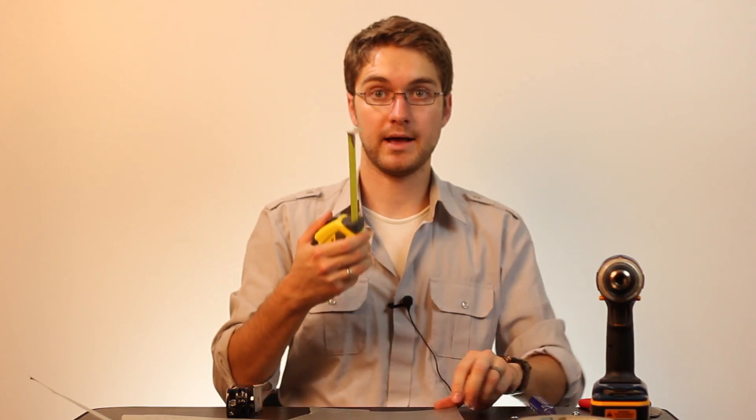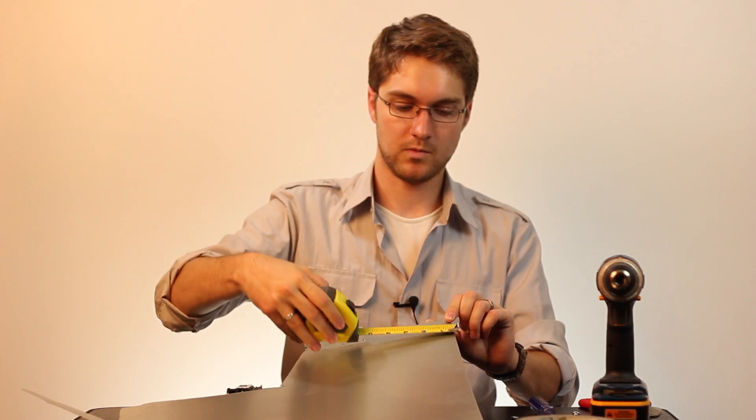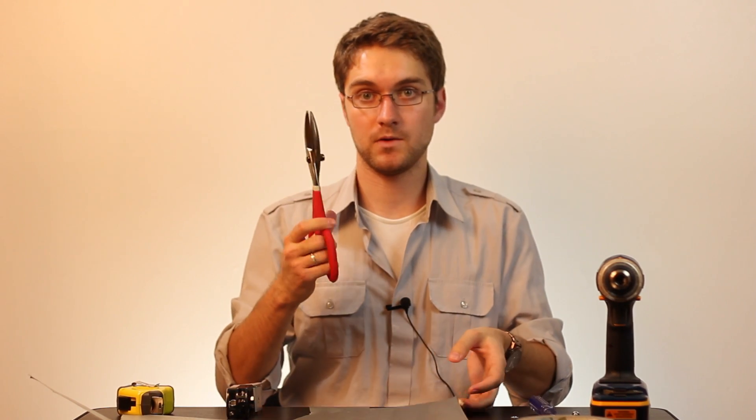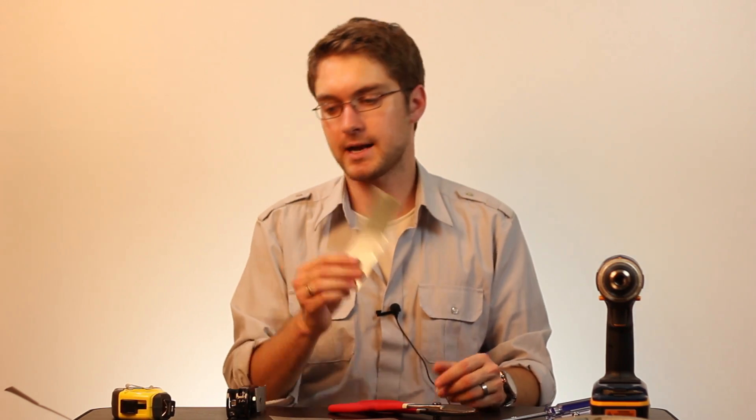First off, we're going to need a strip of metal that is one to one and a half inches wide and five inches long. So go ahead and measure that out, one and a half wide by five long, and then cut it out with your metal shears. Now we've got our metal strip cut out.